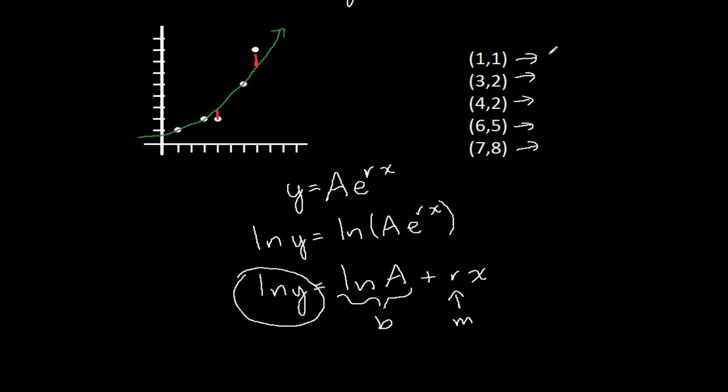Okay, so instead of using the point (1,1), I'm going to use (1, ln(1)). Instead of using the point (3,2), I'm going to use (3, ln(2)). Instead of using the point (4,2), I'll use (4, ln(2)). Et cetera.